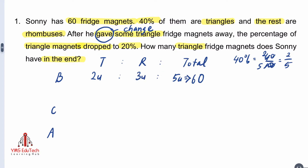The question mentions that he gave some triangle fridge magnets away, so there was a change involved for the triangle magnets, which we do not know how many. Now we're going to convert 20% into a fraction — that makes 1 out of 5. So in the end, there were 1 unit of triangle magnets and 5 units total. Hence, there were 4 units of rhombus magnets left.